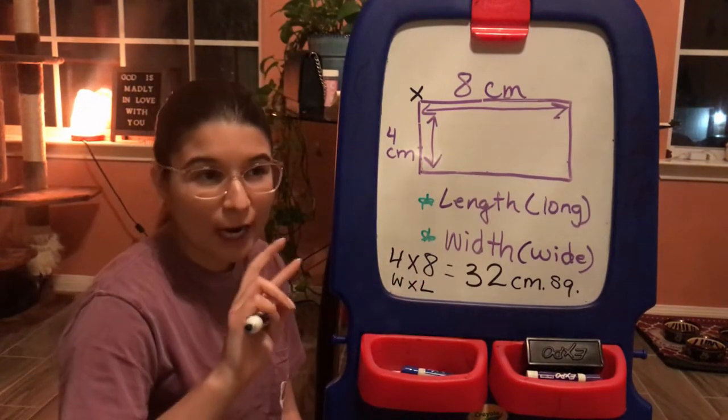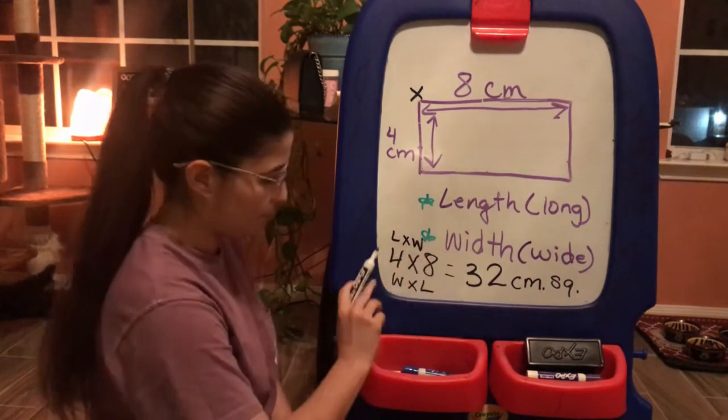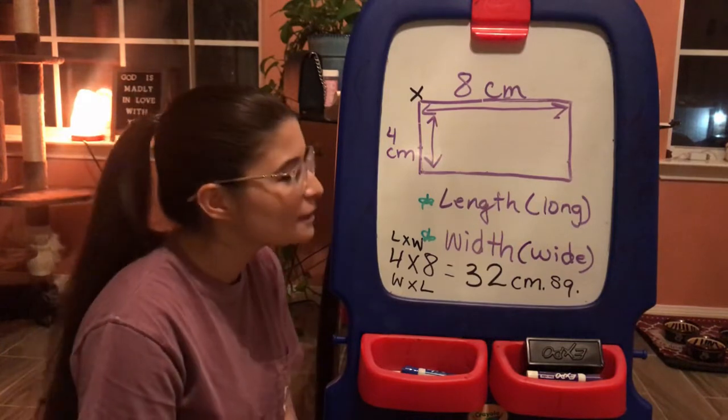So thirty-two centimeters squared is my area for this rectangle. And I figured that out by doing four times eight, which was the same thing as width times length. Or, if you remember our commutative property, I can do length times width as well. I can do four times eight or eight times four.